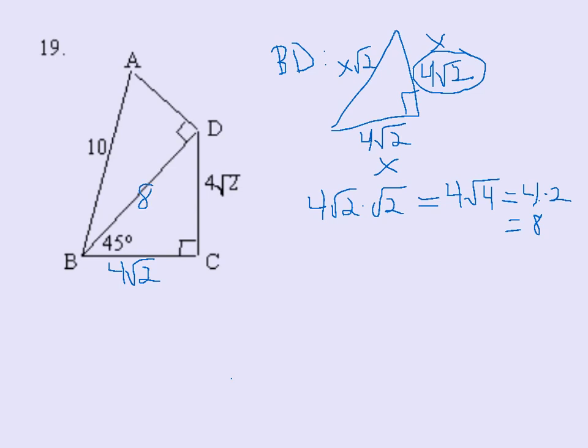So that means BD is 8. Now I have the information I need to find angle A, so I'm going to focus on triangle ABD. Because I have opposite and hypotenuse, that's going to be sine of angle A equals the opposite, which is 8, over hypotenuse, which is 10. If I evaluate inverse sine of 8 over 10, we find out that angle A is 53.1 degrees.